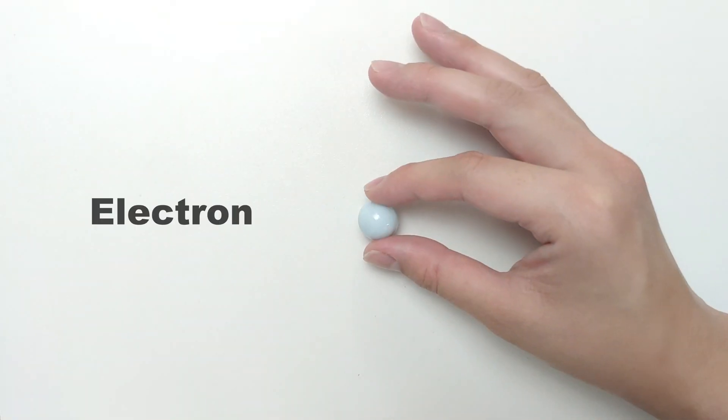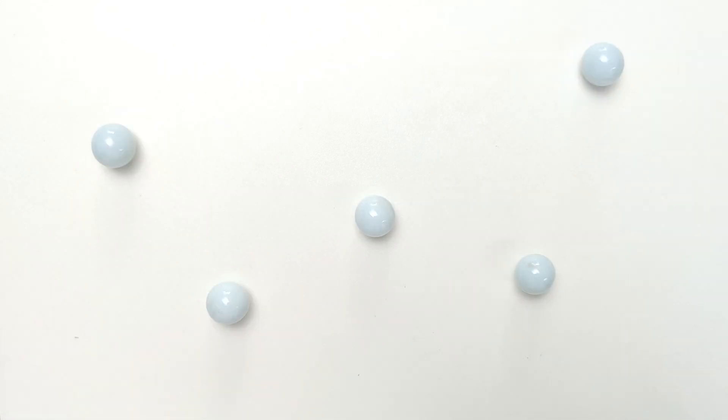Well, for one, it doesn't go along with quantum mechanics. Quantum particles such as electrons are in superposition, meaning that the particle exists in multiple places at the same time before measurement.